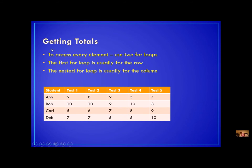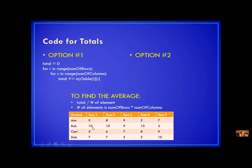The next thing in the program was to get totals and eventually an average. In order to get a total of the entire table, I need to access every element, which means two for loops. Usually the first for loop is for the row and the second is for the column. I go starting with the first element and accumulate everything into a total. Anytime I have a total, I must initialize it — don't forget this important step. If you don't initialize your total before accumulating, you will get an error.